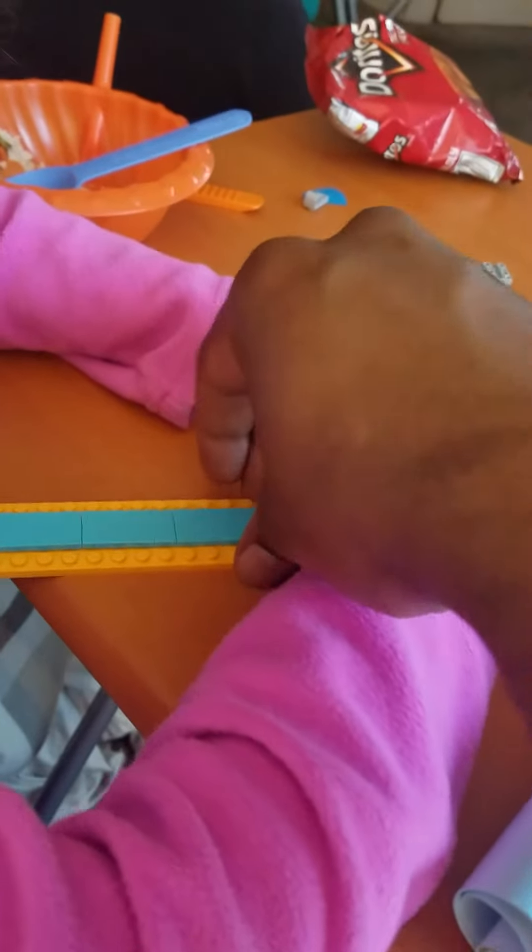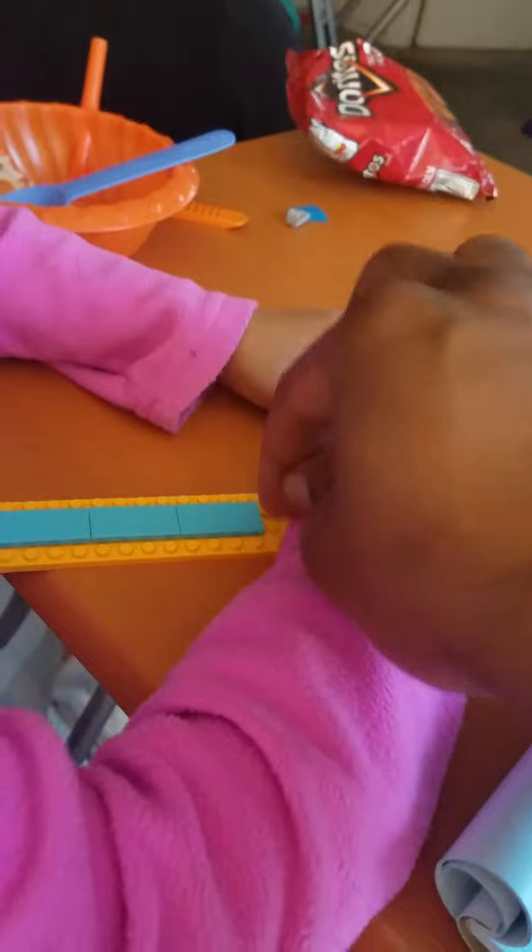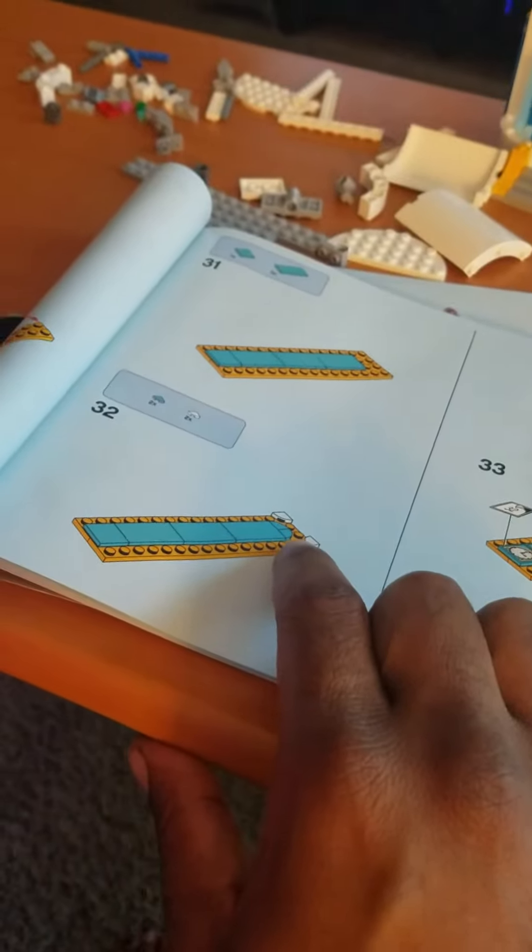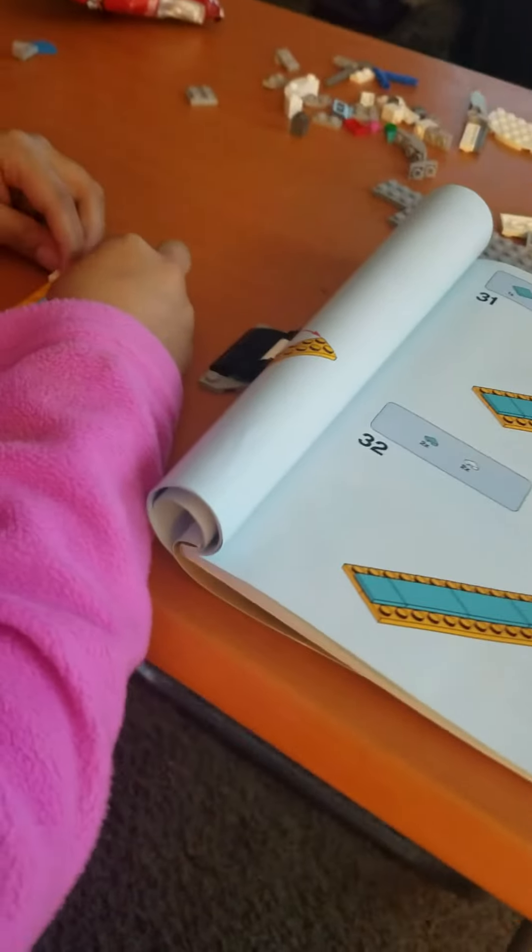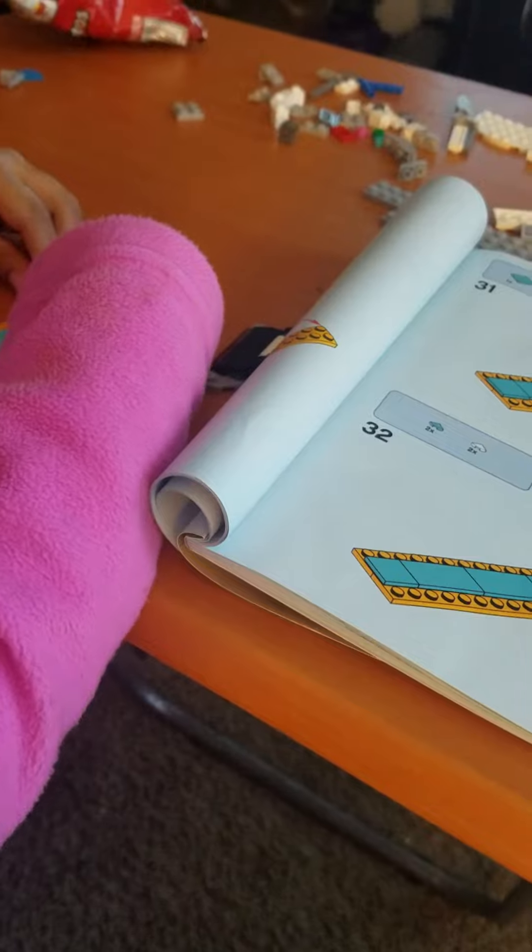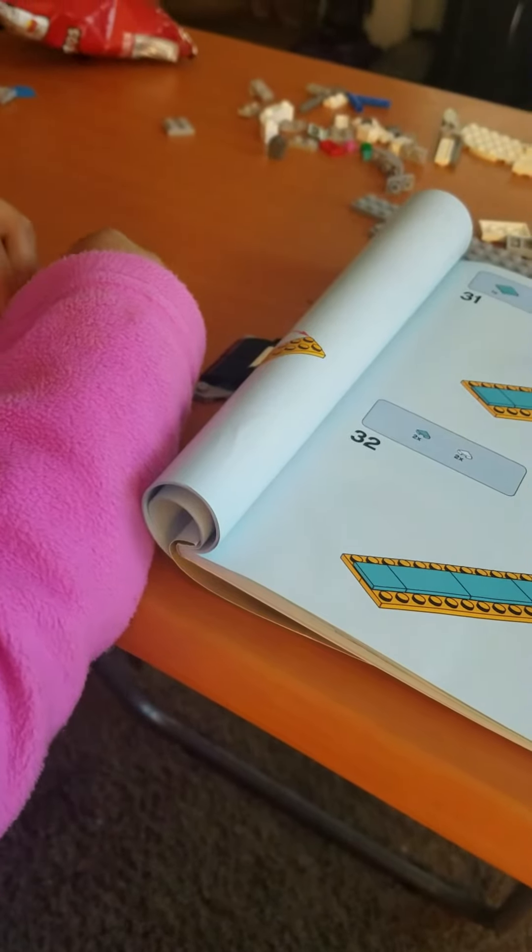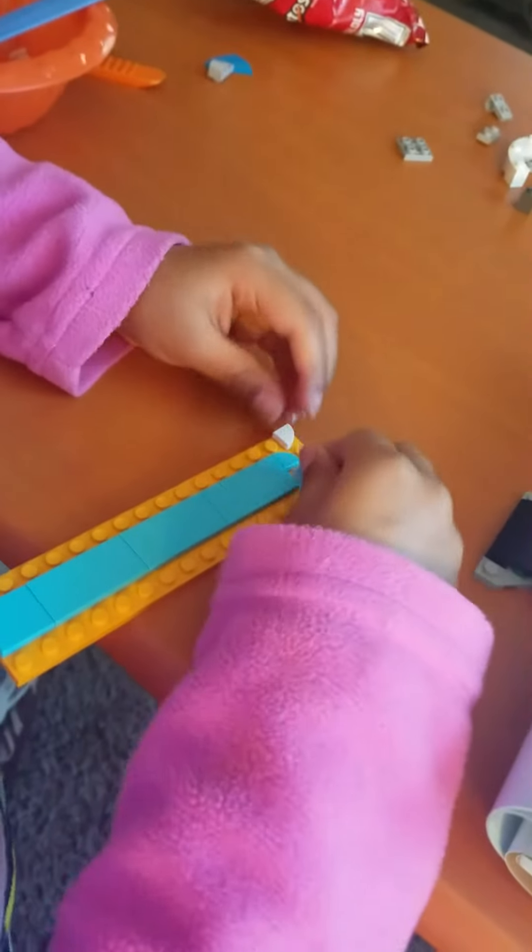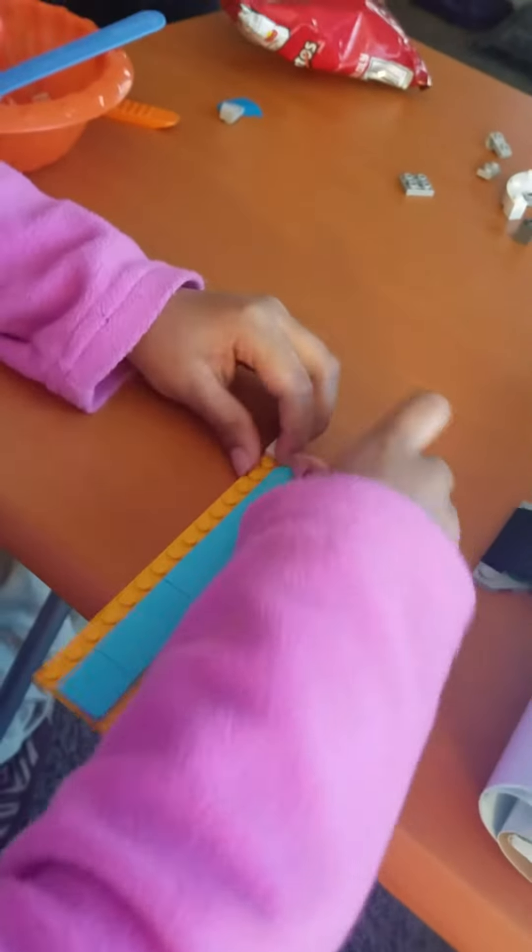There you go, you gotta turn it a little bit. And then you want to put the two blue ones right here, like this. Look, look, look. Yep, over, over the other side, over the other side. Put it on this side, like that. Yeah, now put that one down. You got that water splash.